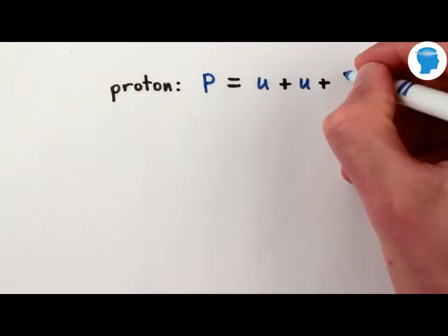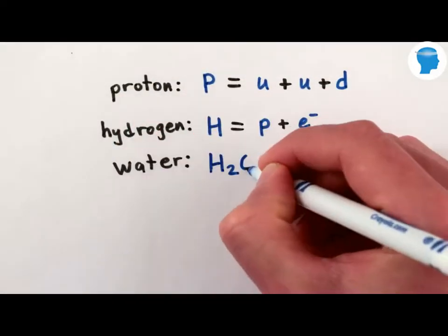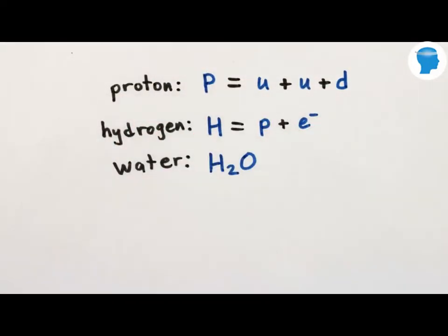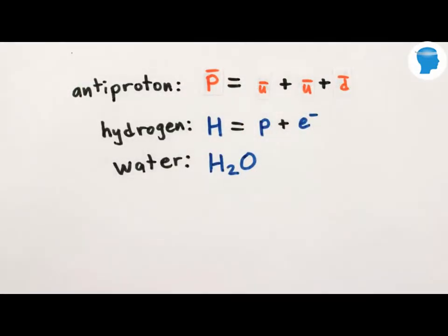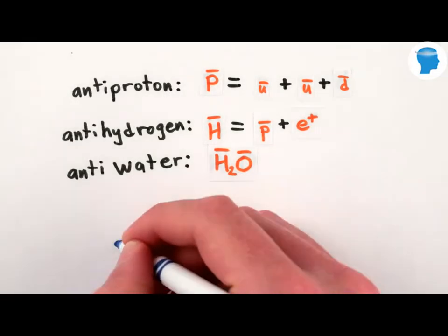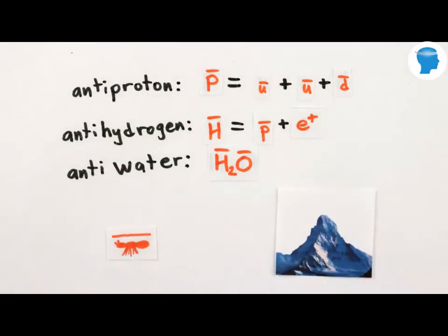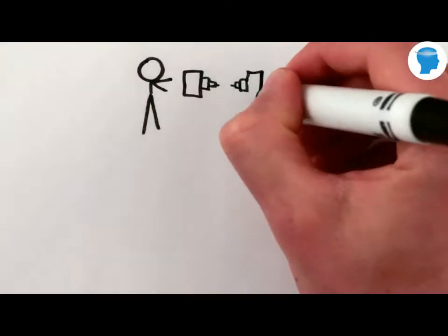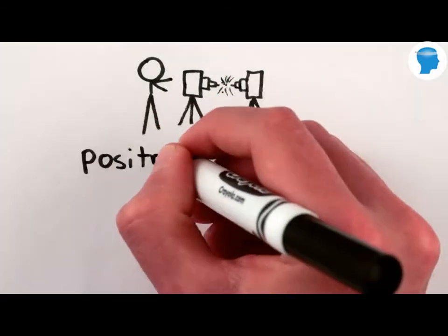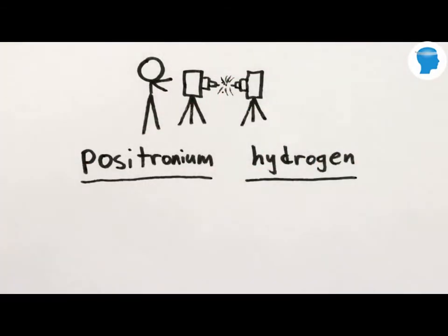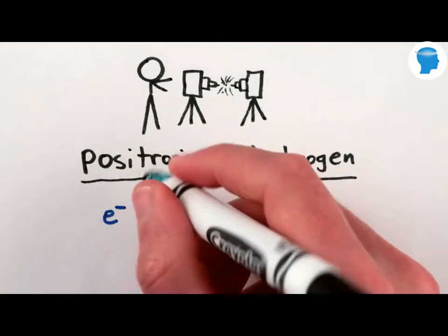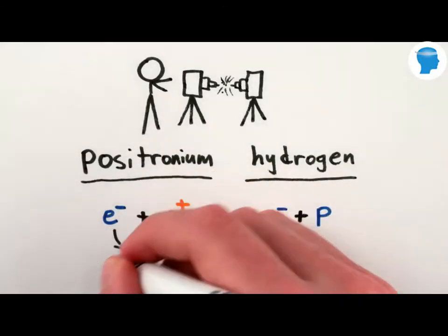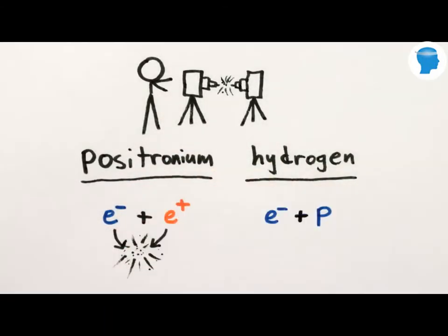Since antimatter particles are essentially identical to regular matter other than the opposite charge, they can combine together in essentially identical ways to form antiprotons, anti-atoms, anti-molecules, and in principle anything from anti-ants to antimatter horns. We can also make the really cool positronium atom — it's like hydrogen, except instead of an electron orbiting a proton, it's an electron orbiting a positron, until they annihilate each other in under a nanosecond.